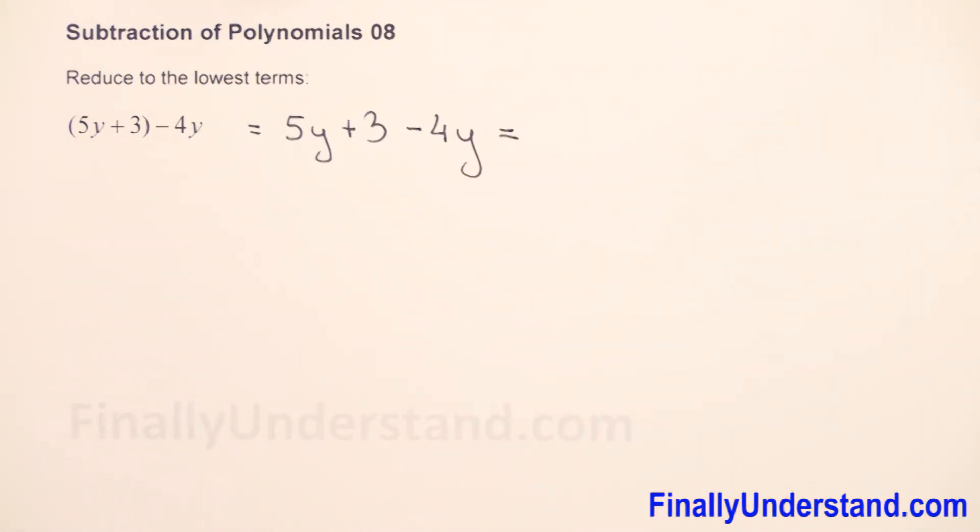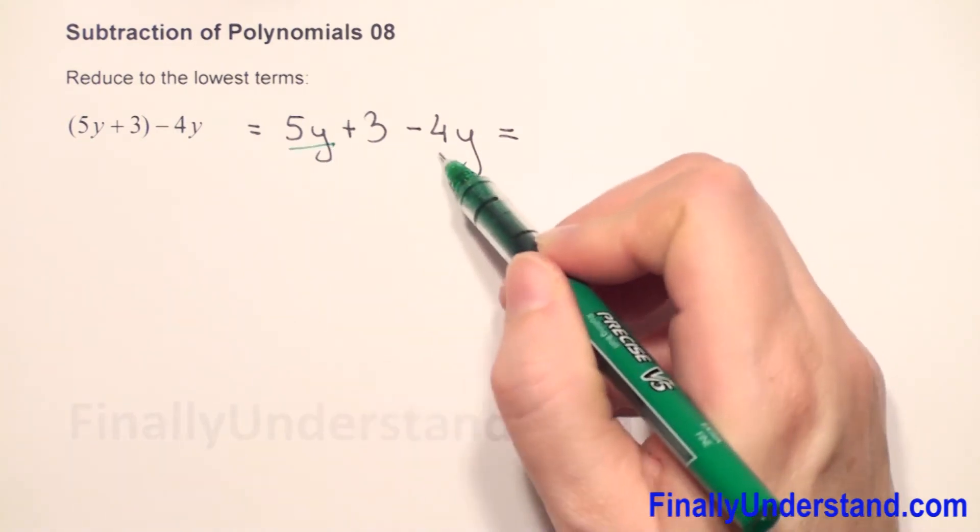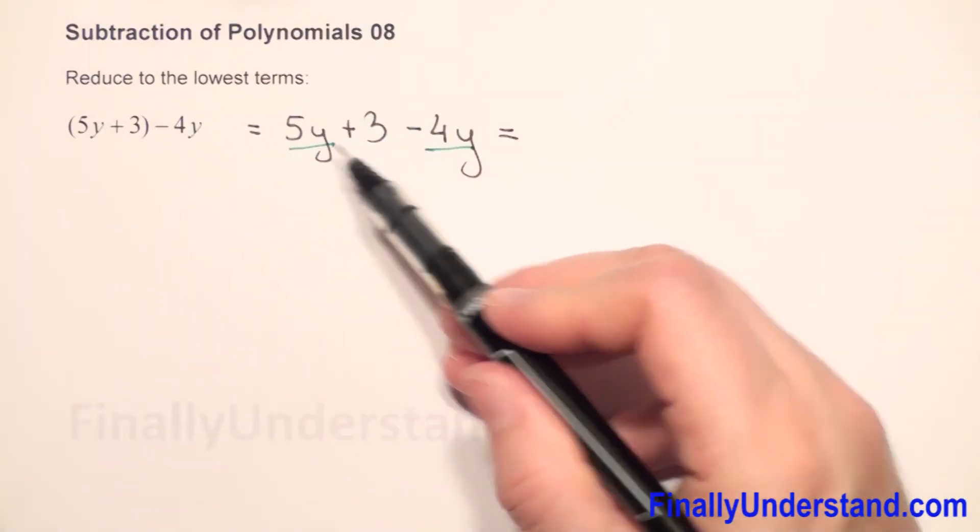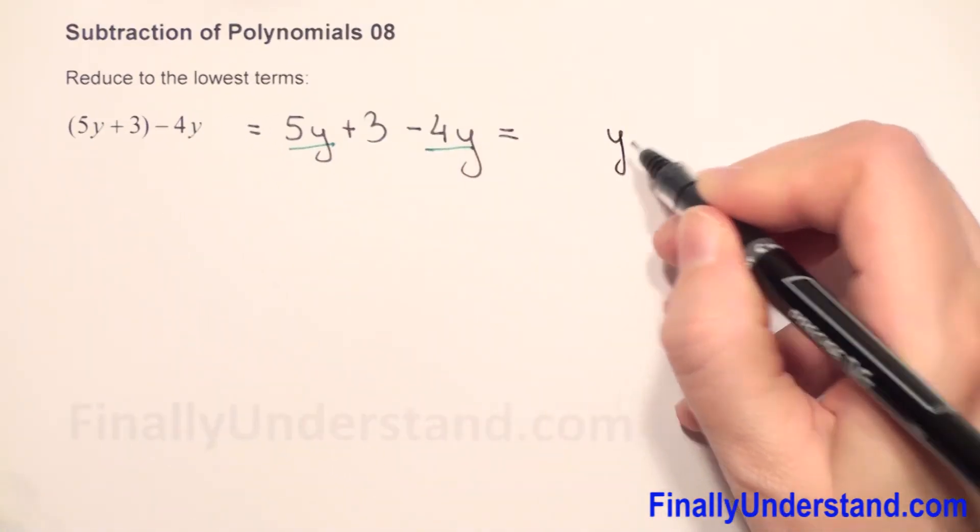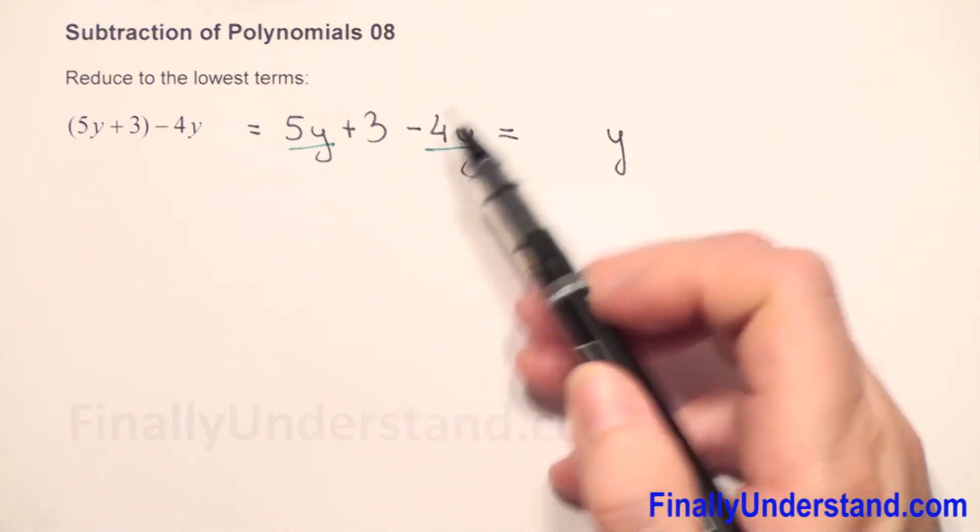The same variables must be combined. We have 5y and negative 4y, and we have constant. So y and y, we copy the y and now we just subtract: 5 minus 4 is 1.